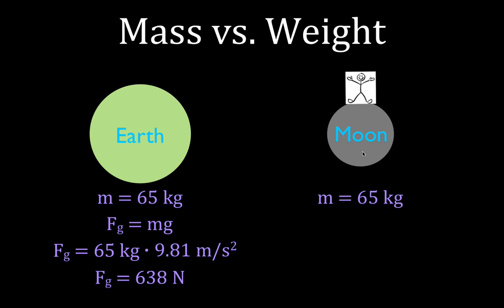But we can calculate your weight on the Moon using the same equation. The force of gravity, the weight, is equal to the mass. Well, the mass is the same, but on the Moon, the acceleration due to gravity is less than it is on Earth. It's 1.62. So we multiply 65 kilograms times 1.62 meters per second squared, and you'll find that on the Moon, you weigh 105 newtons. You weigh less because there's less attraction because the Moon is smaller and it has less mass.